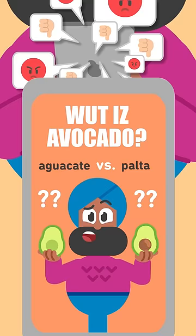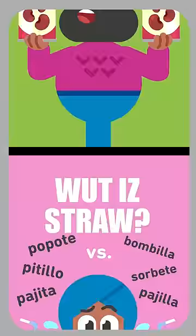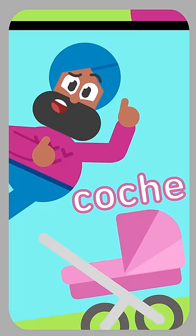So, I learned that in Spanish, names for things can vary a lot depending on the place you're in — and so can definitions. Like, coche in some countries is a car. In others, a baby carriage. And in some places, even a pig!